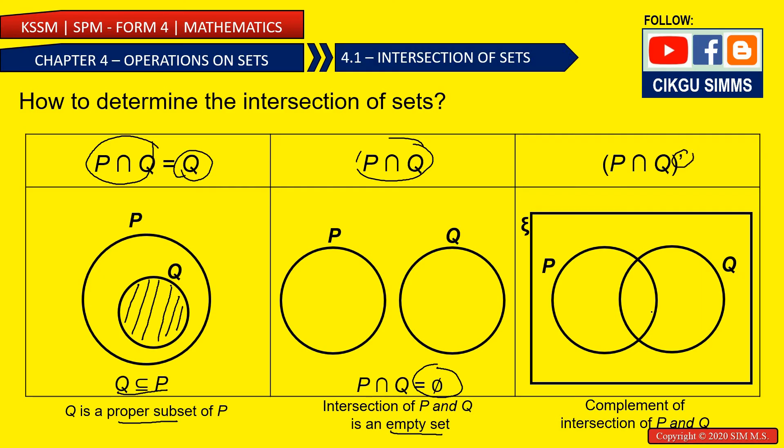How about this one? This symbol means complement. So P and Q is this part, right? Complement means other than this part. So, you need to shape everything, everything outside except this part. So you need to shape, including this part, and this part. So you need to leave this part blank and you shape all the other part.